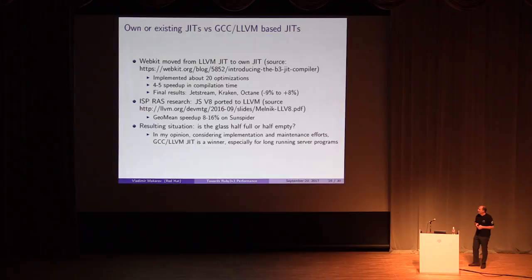A couple more examples about JIT performance. WebKit JavaScript moved from LLVM based JIT to own JIT. They implemented about 20 optimizations and increased compilation speed by five times. Still, they reported practically the same results on widely used JavaScript benchmarks. Only now they have to maintain this complicated code. But big companies like Apple can afford to spend resources on such projects.